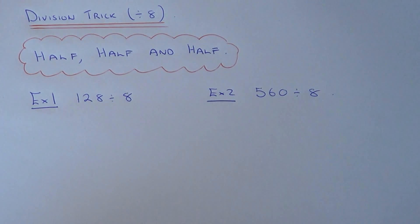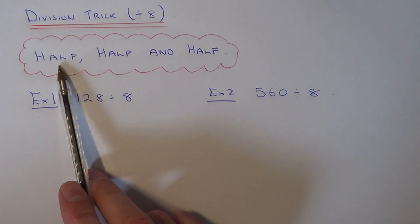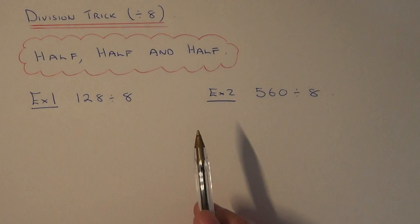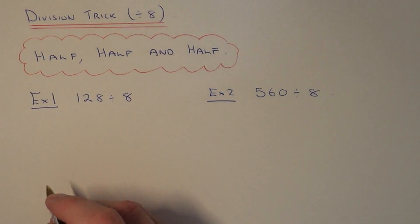Today I'm going to show you a cool little math trick for dividing any number by 8 without having to know your 8 times tables. The trick is to half your number, half it again, and then half that final answer. So we need to half the number three times basically.